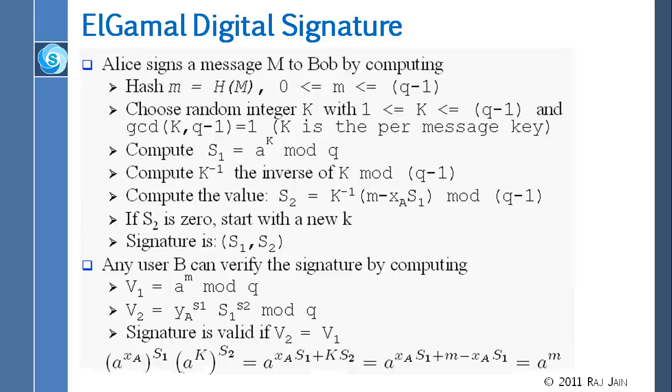You select a random integer K, that integer is a nonce just used for that message. So you select a K which is not only random but also relatively prime to Q-1, and that is just for that message. The other side doesn't know K. For the other side to use that value, you send them S1, which is a raised to K mod Q. So that is the first thing you send, a raised to K mod Q.